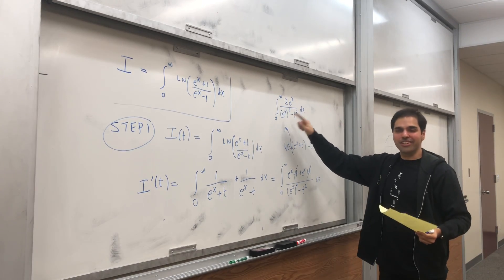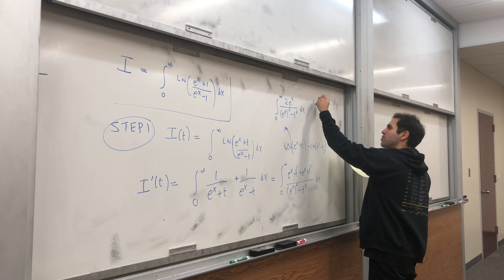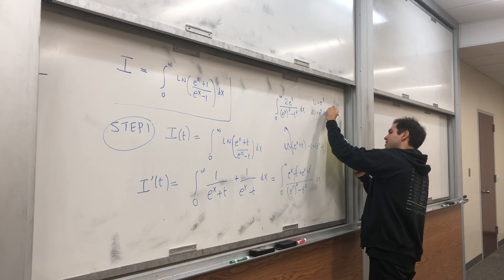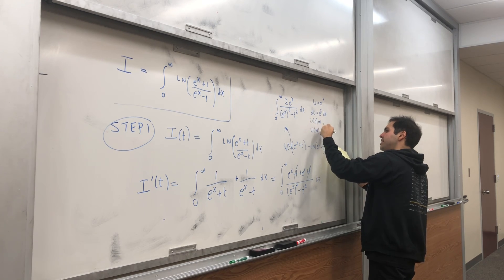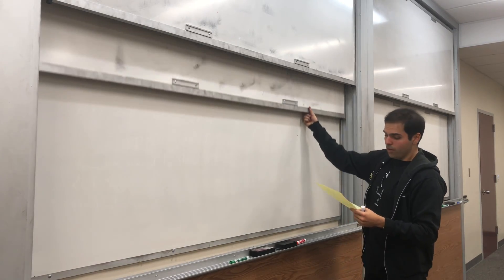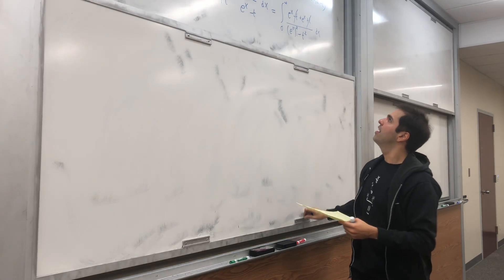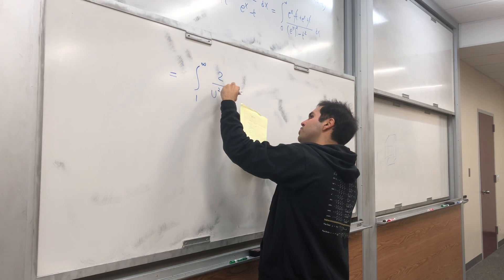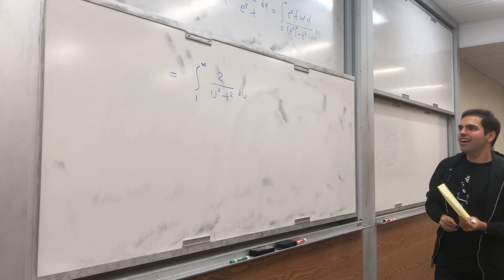This calls for the substitution u = e^x, so du = e^x dx. When x = 0, u = 1; when x = infinity, u = infinity. What we're left with is the integral from 1 to infinity of 2 over (u² - t²) du.